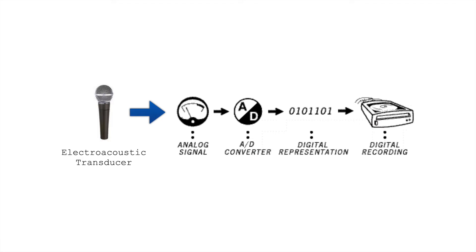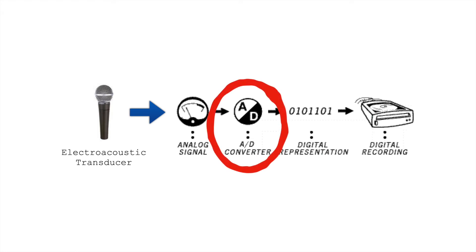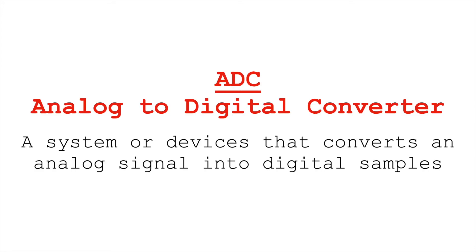You could also take those changes in voltage and change them into digital information, but that's going to require another step. That's going to require an ADC — an analog to digital converter. In order to store or transmit through any digital device, we need to convert these voltages, these analog signals, into a series of ones and zeros, a series of numbers, data.